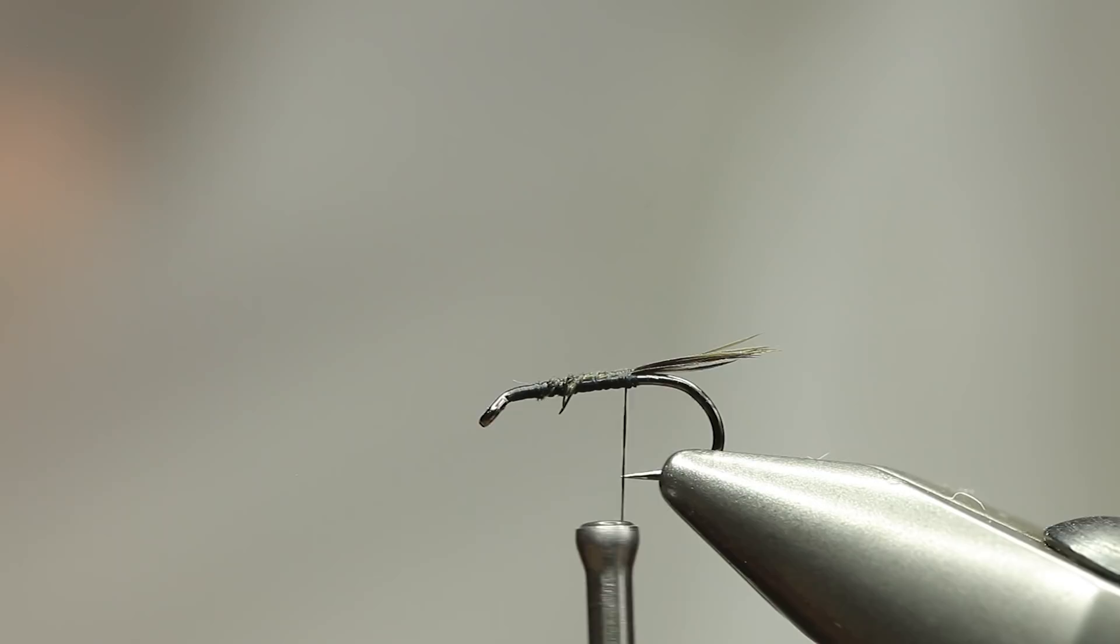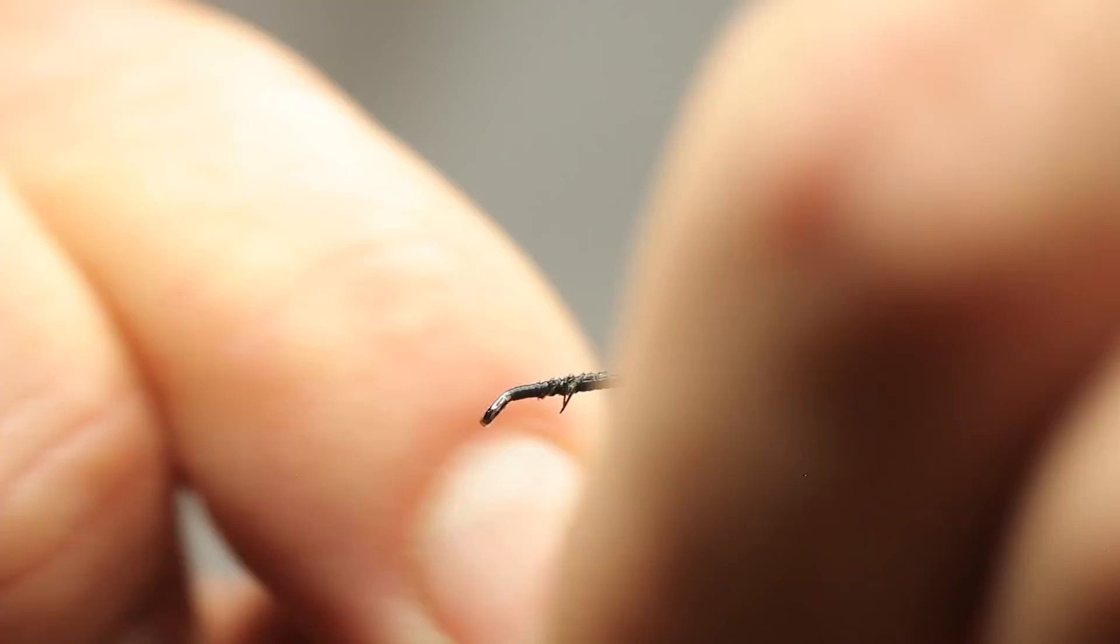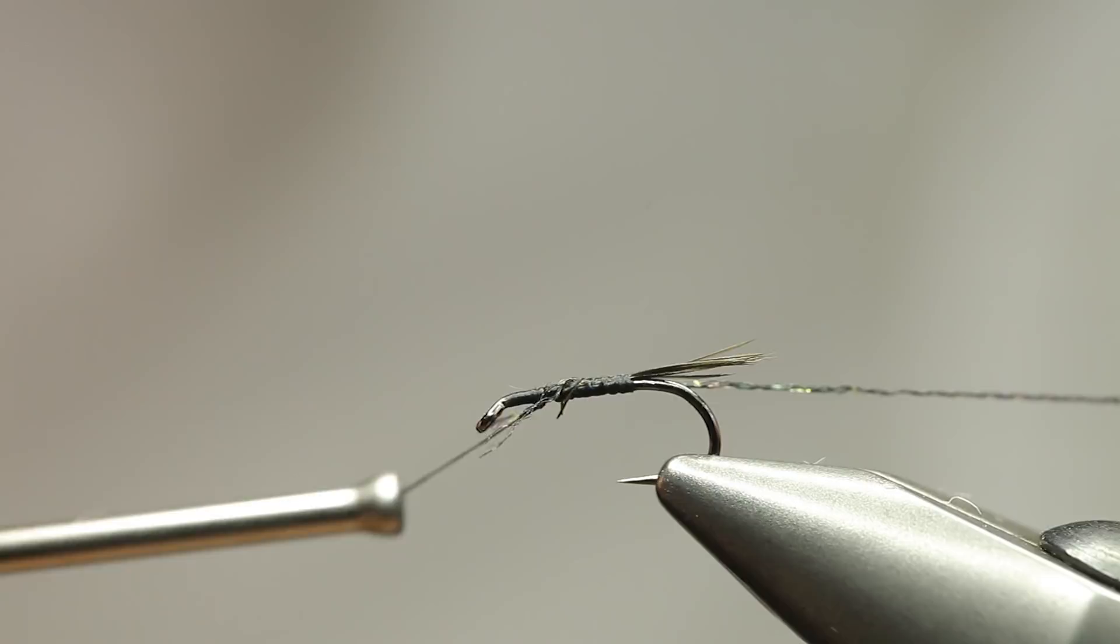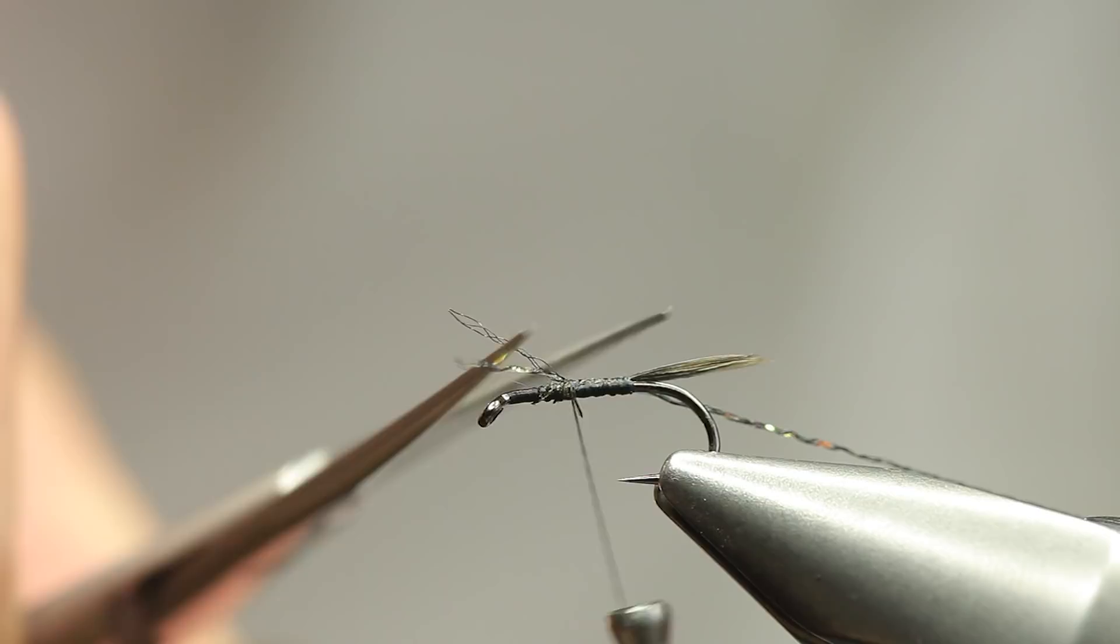No pheasant tail or peacock herl at all in this fly, as a normal cruncher or magnet. And the beauty of that is all the materials are very robust. So just get rid of that and then tie that up.